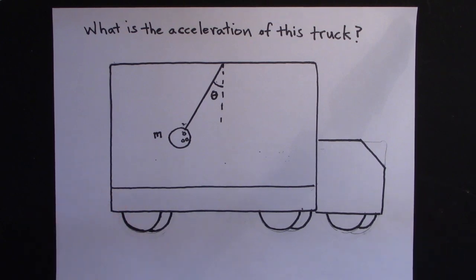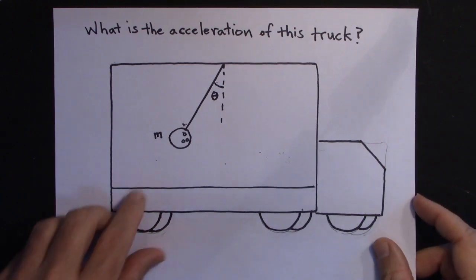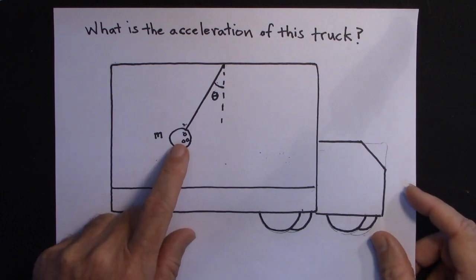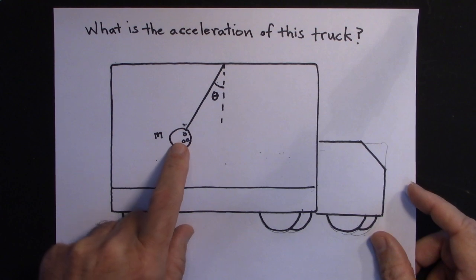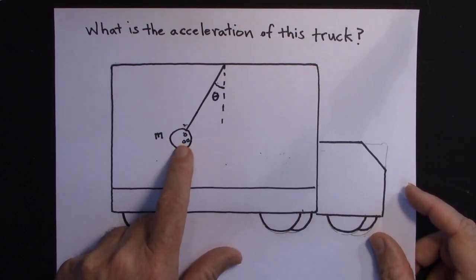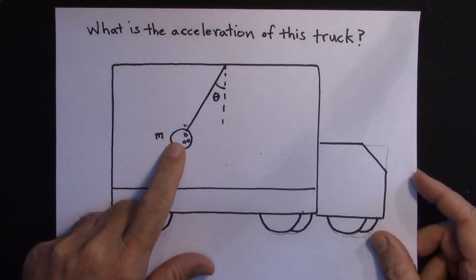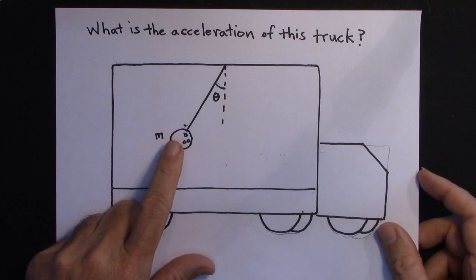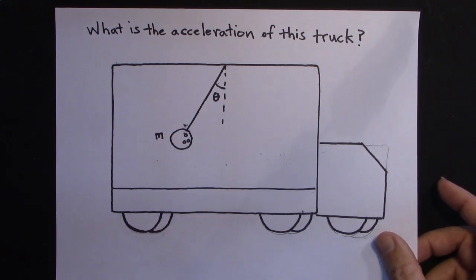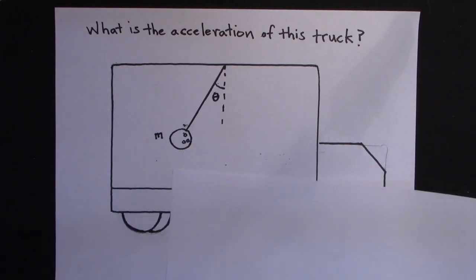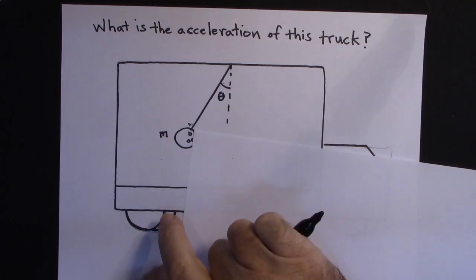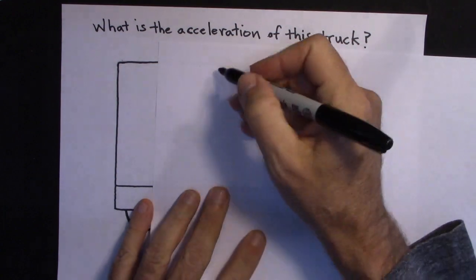Let's go back to the bowling ball problem first. I'm going to solve both these problems the same way — in fact, I'm going to solve every single Newton's second law problem the same way: draw a free body diagram of the object in question. In this case it's going to be the bowling ball, and we're going to assume the bowling ball has the same acceleration as the truck because once it reaches this position it won't be moving relative to the truck. So I'll draw a free body diagram and redraw this.